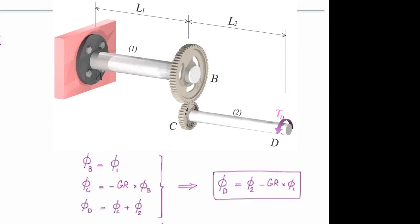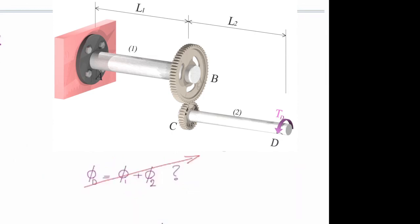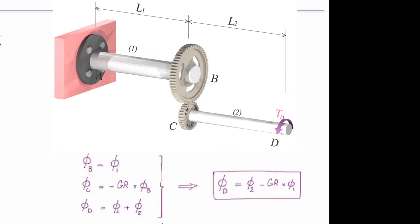So this is how we can determine twist in a gear assemblies. Now compare this equation with this one. So it is not phi 1 plus phi 2. I have to take care of the gear ratio, which changes the twist when we move from one gear to another gear. Does that make sense?